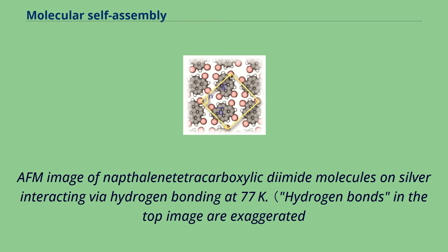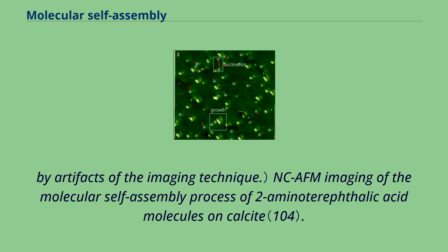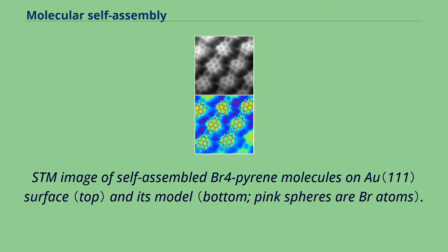AFM image of naphthalenetetracarboxylic diamide molecules on silver interacting via hydrogen bonding at 77K. Hydrogen bonds in the top image are exaggerated by artifacts of the imaging technique. NCAFM imaging of the molecular self-assembly process of two amino terephthalic acid molecules on calcite. STM image of self-assembled BR4 pyrene molecules on a surface and its model.